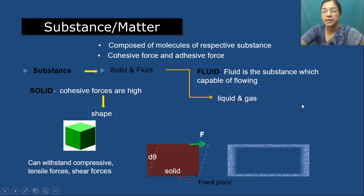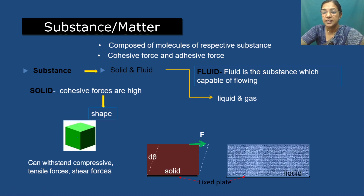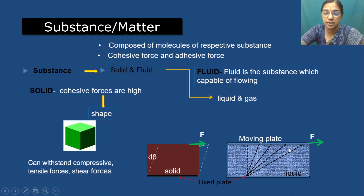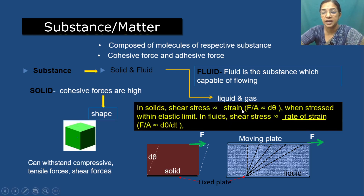This can be explained by keeping liquid between two plates where one side is fixed and the other is moving. Applying a force at the top plate causes it to move. After some time delta-T, the liquid section moves in that direction, and for the next delta-T it continues moving — this keeps going as long as the shear force is applied. Shear force is a tangential force, so the fluid deforms continuously and cannot resist it. To conclude: in solids, shear stress is proportional to strain (F/A ∝ d-theta), whereas in fluids, shear stress is proportional to rate of strain (F/A ∝ d-theta/dt).